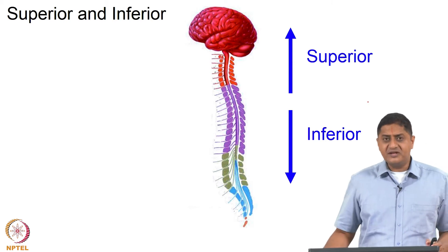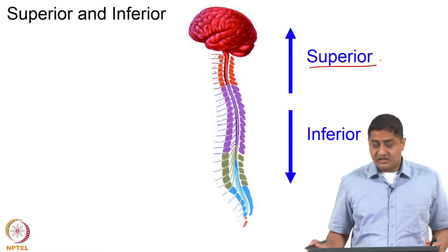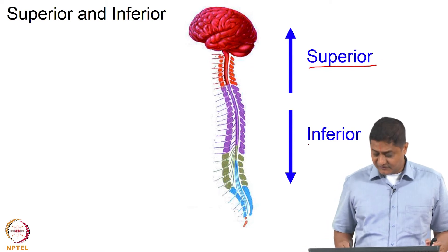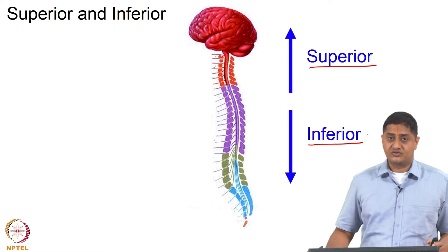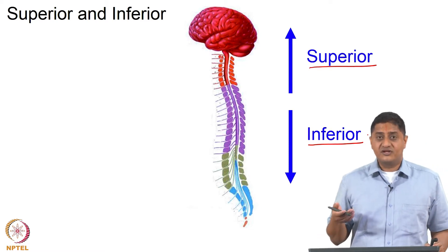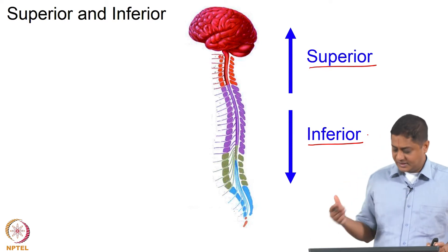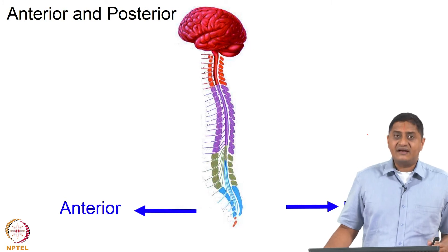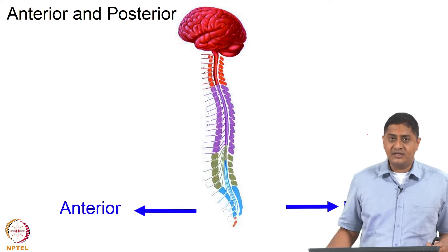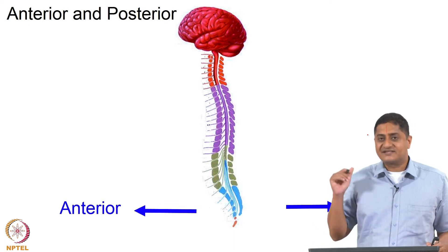Superior and inferior refer to the following: superior refers to those regions that are closer to the head, whereas inferior refers to those regions that are closer to the foot. So the head is superior to the chest, for example. Anterior in general refers to the front side of the body, whereas posterior refers to the back side of the body.